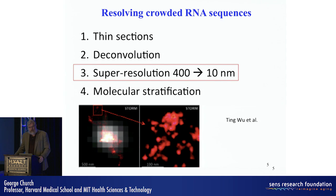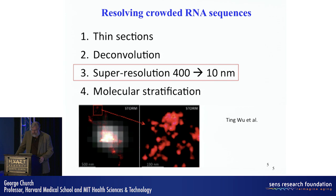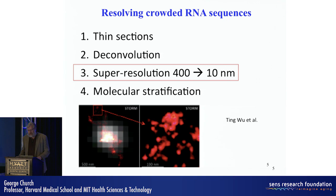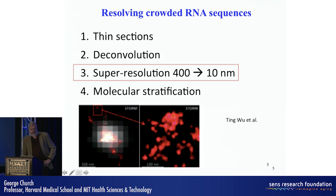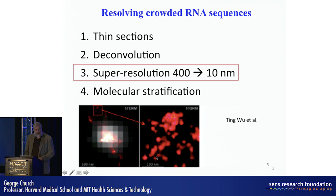We have four methods that are all working well. One is thin sections. Deconvolution is a computational method. At the bottom of this slide, we have super-super resolution, which allows us to get down to 10 nanometers from a typical 400 nanometer resolution. The white region shows typical pixelated resolution, and the small square blown up shows the super-resolution — when we say 40 times higher resolution, we really mean it. This particular image was taken from Ting Wu, a professor at Harvard Medical School, Department of Genetics.